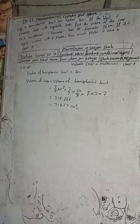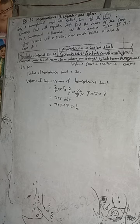So this is the solution. The volume of the soup equals the volume of the hemispherical bowl, and the answer in the book is 718.67 cm³.